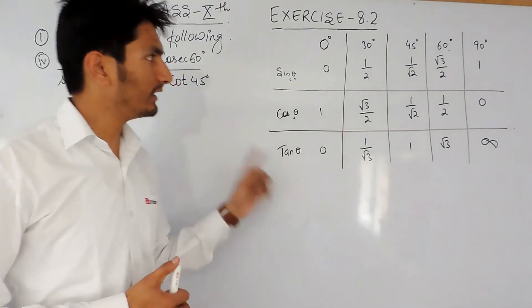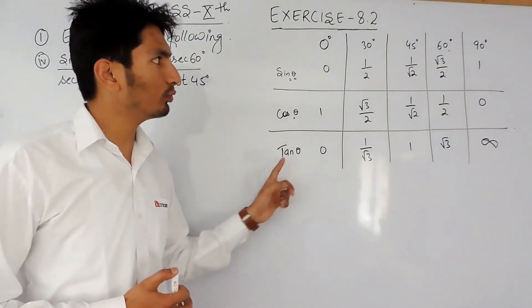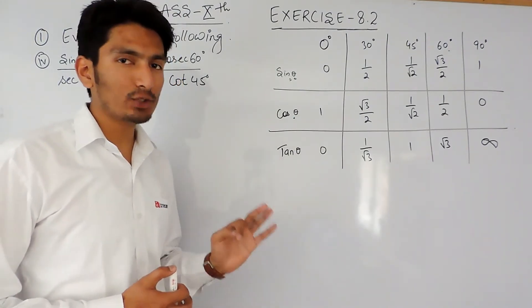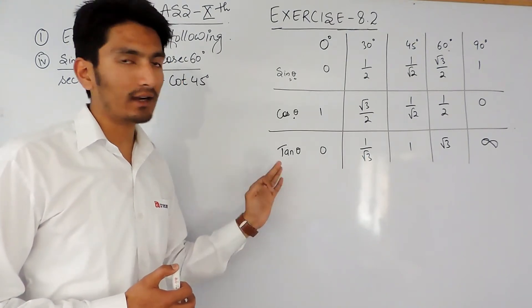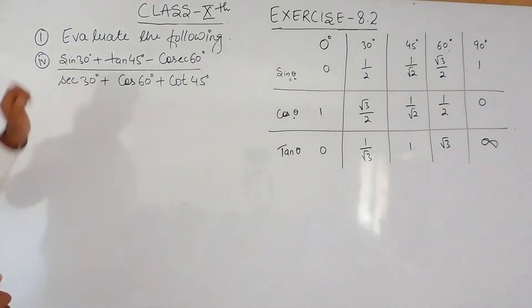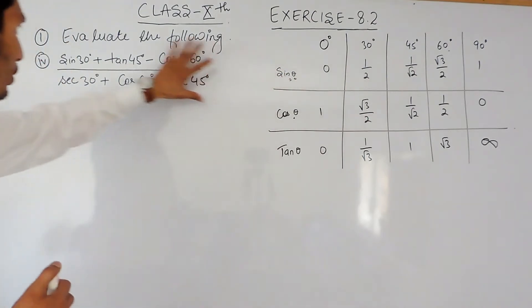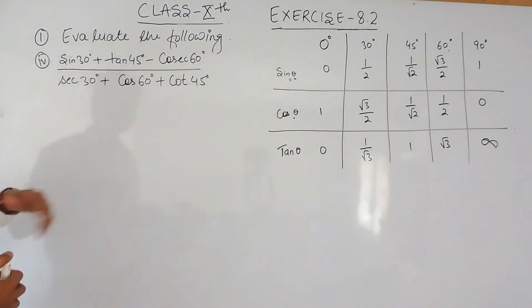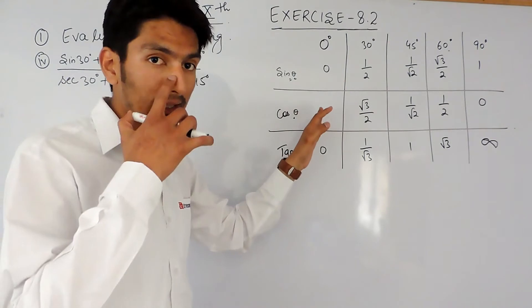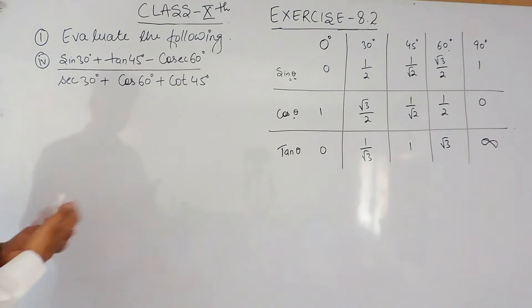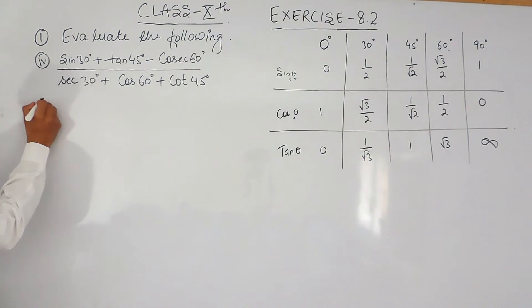In the first part I have already discussed how to make this table. But I will advise you to learn this table by heart — you must know the value of sine 30 without looking at this table. Similarly, you must know all values without looking into this table; then only the solution will be very easy.